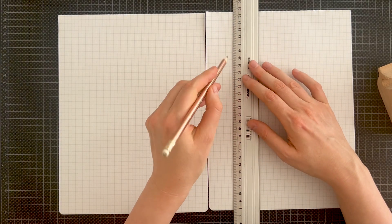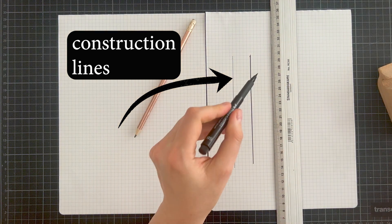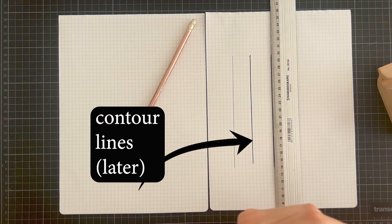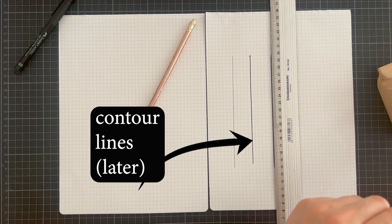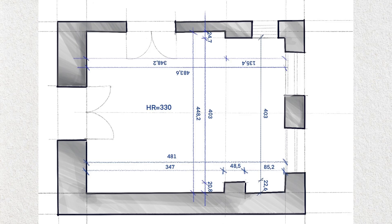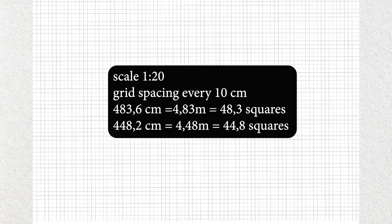Alright, let's move to contour. We now want to draw the rough interior contour of the room. You will want to pick a pencil that helps you make very fine, light lines, because we will be drawing much stronger lines over them later on. Take the width and the length of your room and convert it into little squares. My room is 483.6 by 448.2cm — that's 4.83m by 4.48m. Because one square represents 10cm, my room is 48.3 squares by 44.8 squares. I mark a dot for every 10 squares, or every 1m, and make a contour that is 48.3 by 44.8 squares.